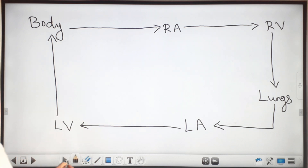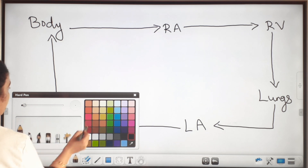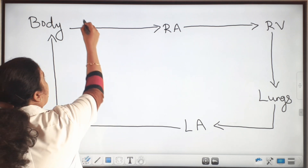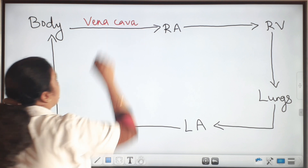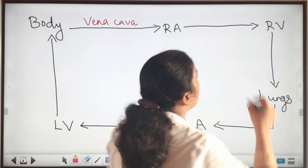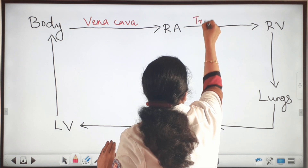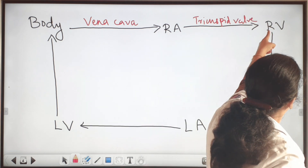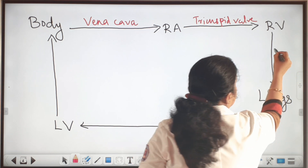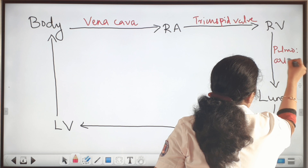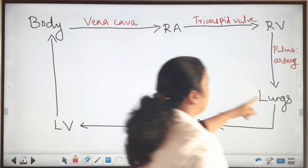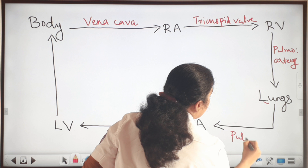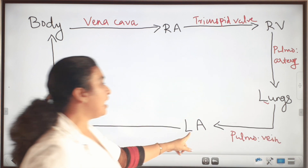Now we can see which blood vessel carries blood through each stage. From the body to the right atrium: vena cava. From the right atrium to the right ventricle: through the tricuspid valve. From the right ventricle, through the pulmonary artery the blood enters into the lungs. From the lungs, through the pulmonary vein the blood carries to the left atrium.